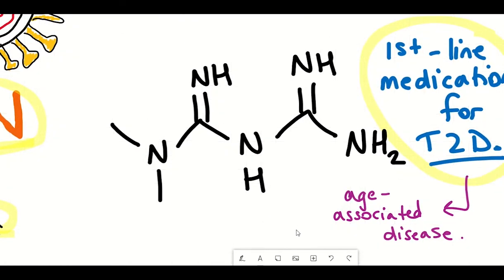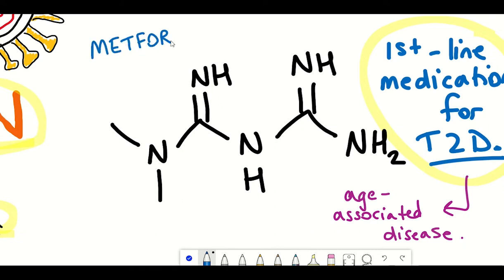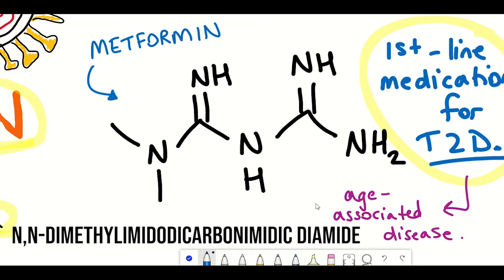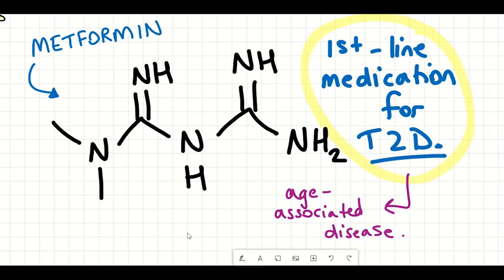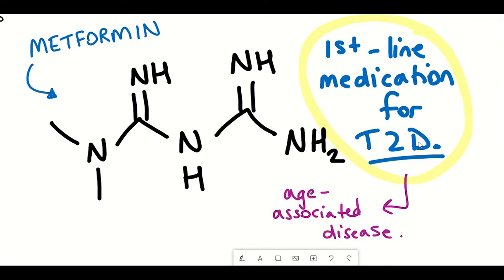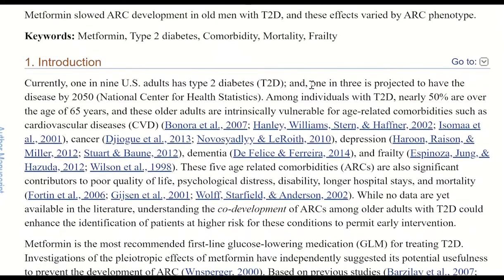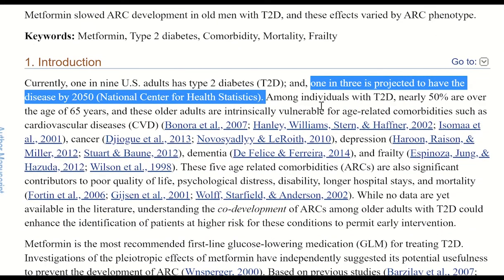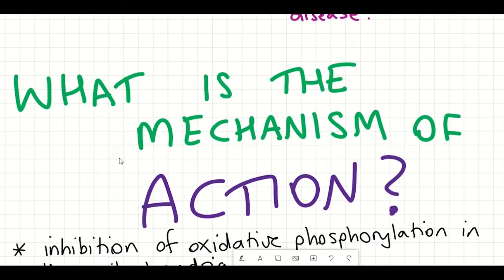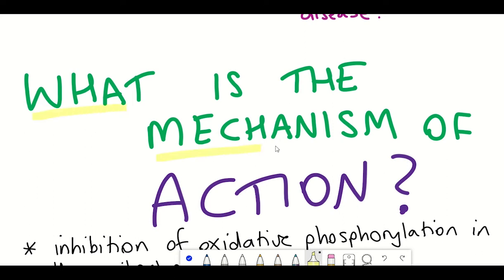I hadn't mentioned metformin much before on this channel, but let's go into detail now. What you're looking at is metformin, or to give the correct name, N,N-dimethyl-imido-dicarbonamidic diamide — we'll just stick with metformin. Metformin is the first-line medication for the treatment of type 2 diabetes, used to treat high blood sugar levels. Type 2 diabetes is an age-associated disease, and according to one article there's a projection that by 2050 one in three US adults could have it. However, the molecular mechanism of metformin isn't completely understood and a variety of potential mechanisms have been proposed.